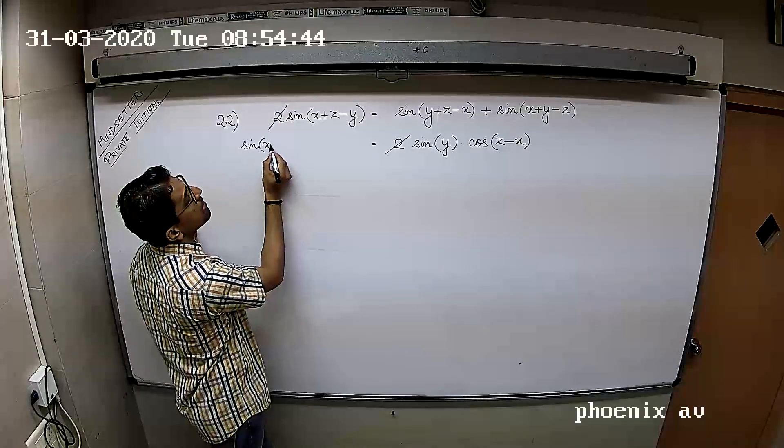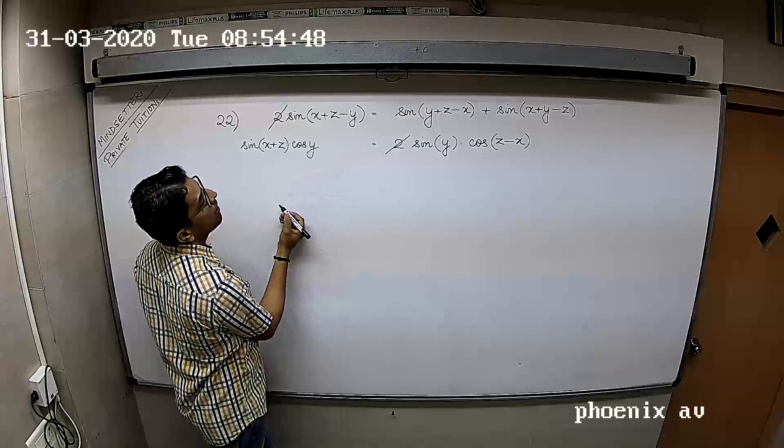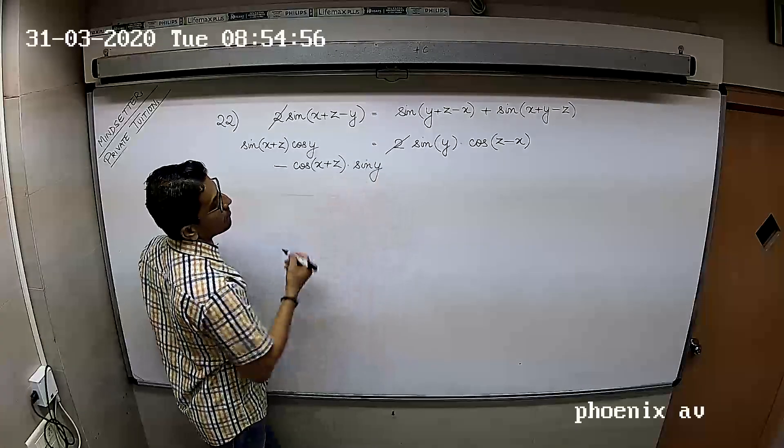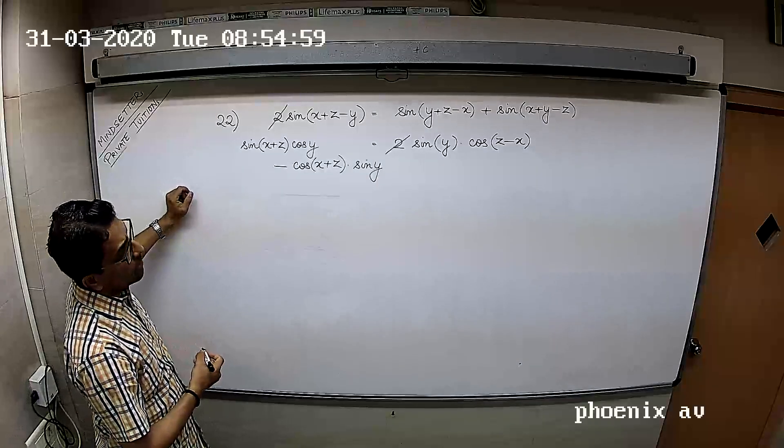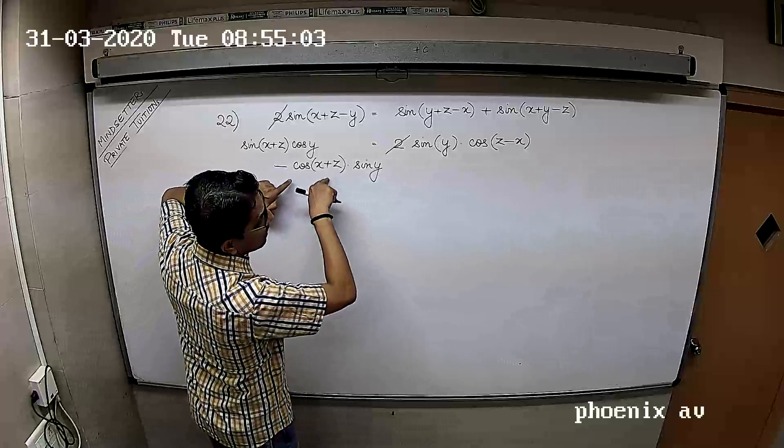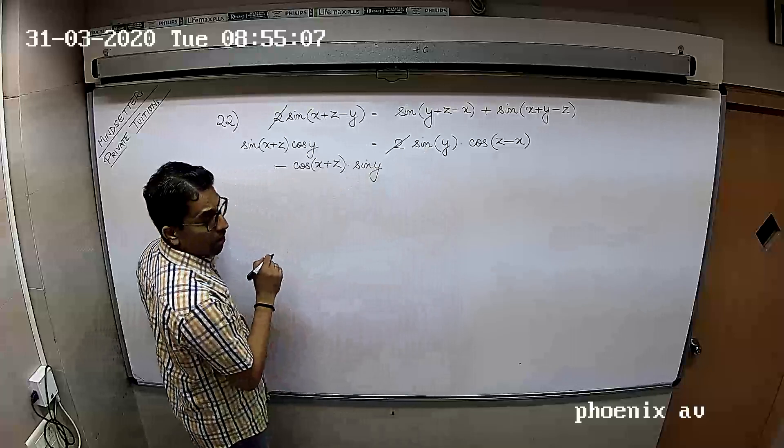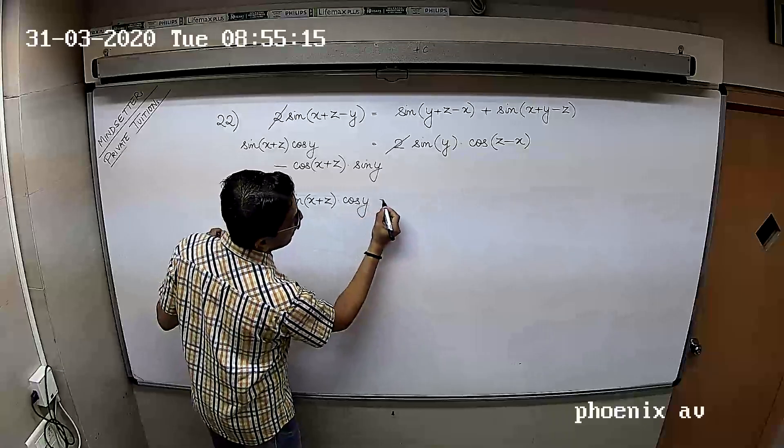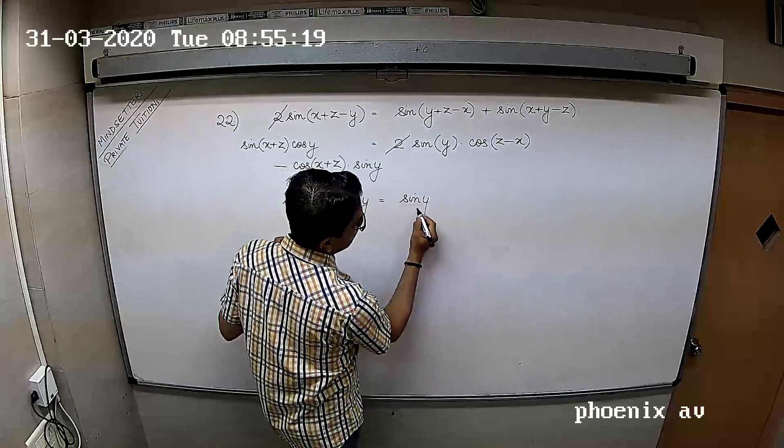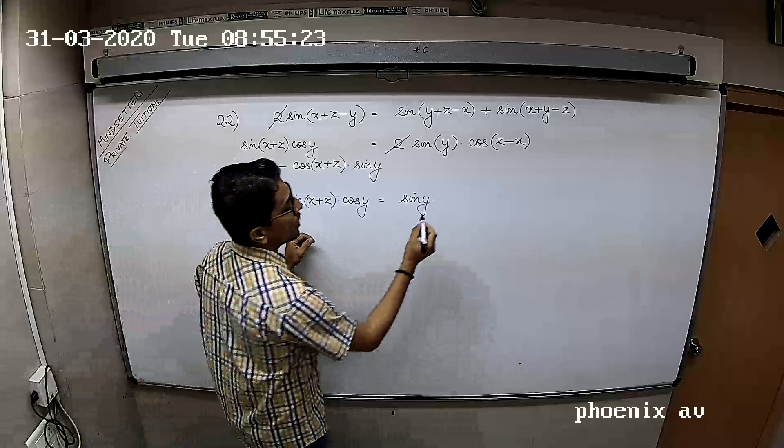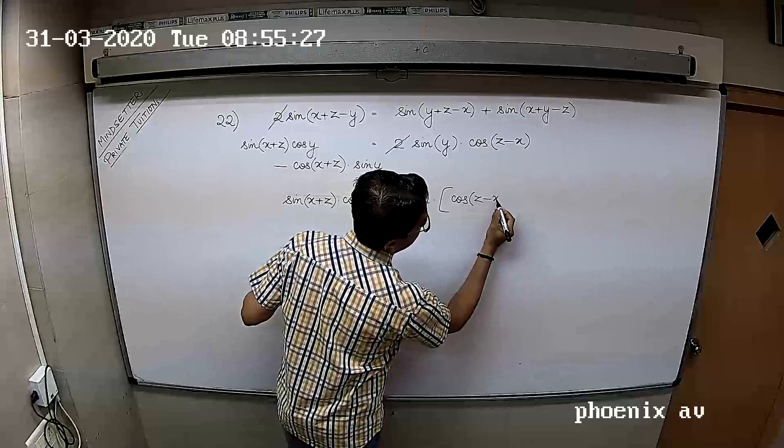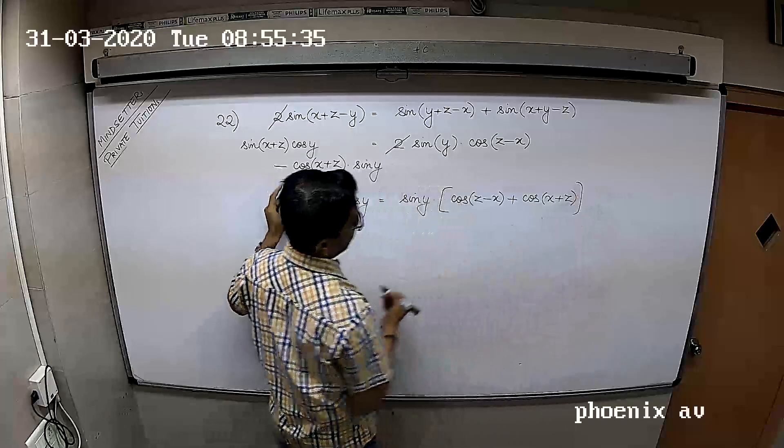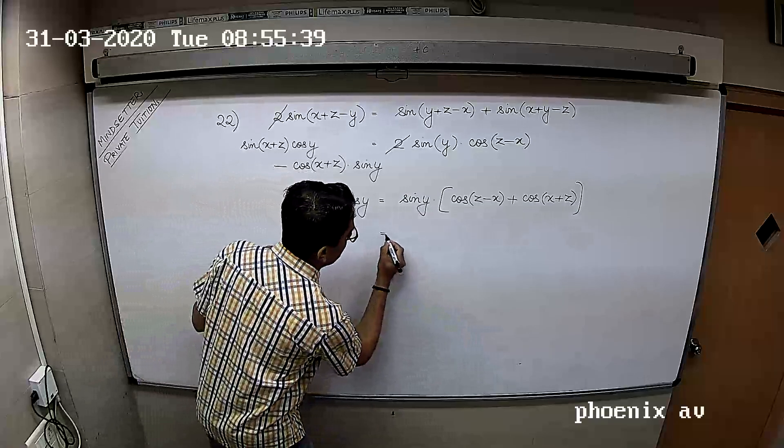Can we say this can be expanded as sin of X plus Z cos of Y minus cos of X plus Z into sin of Y? So this should be sin of X plus Z into cos Y equals sin Y into cos of Z minus X plus cos of X plus Z.